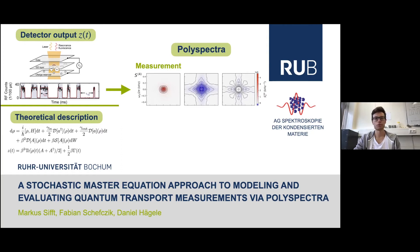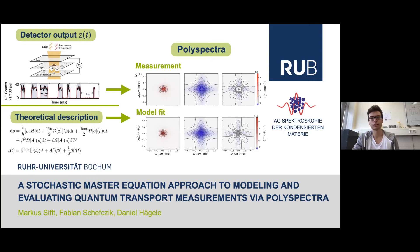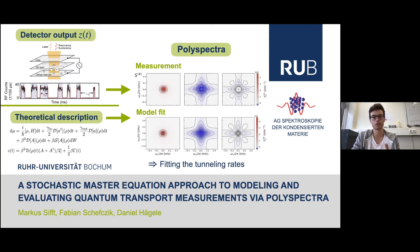We are going to do this by using so-called polyspectra or higher order spectra that can be calculated directly from the measurement. Your detector will spit out these, which can then be fitted to their theoretical counterpart to characterize the system. In the case of transport measurements this means determining the tunneling rates of an electron into and from the dot. This technique leads to the very same results as the full counting statistics, but does so completely automatically.